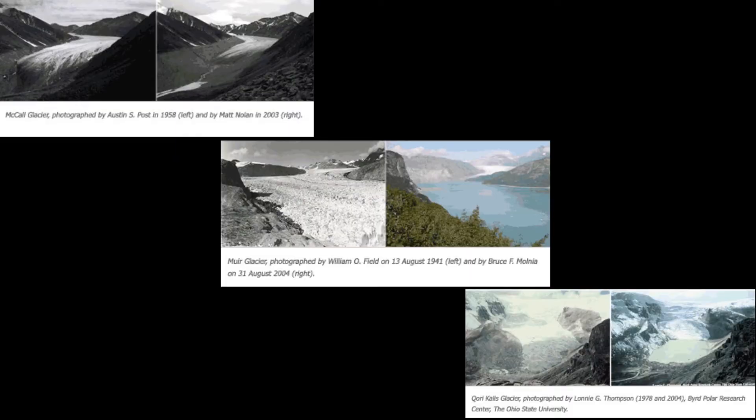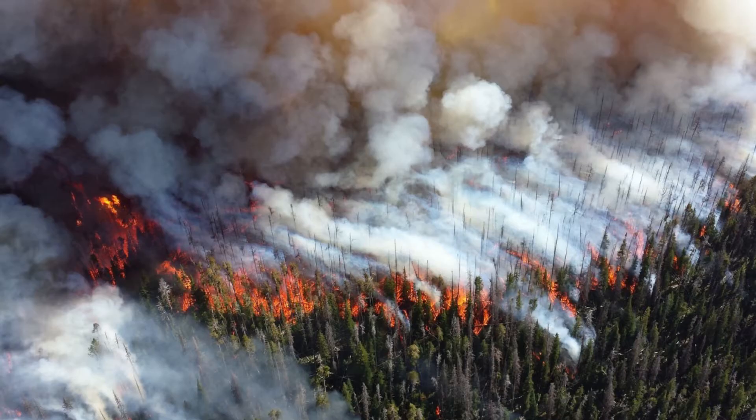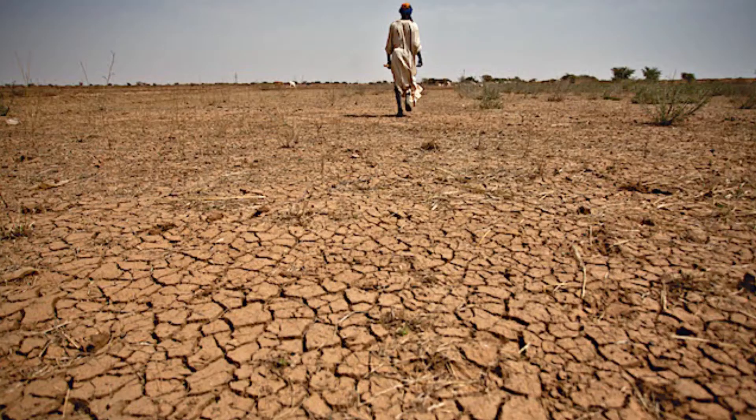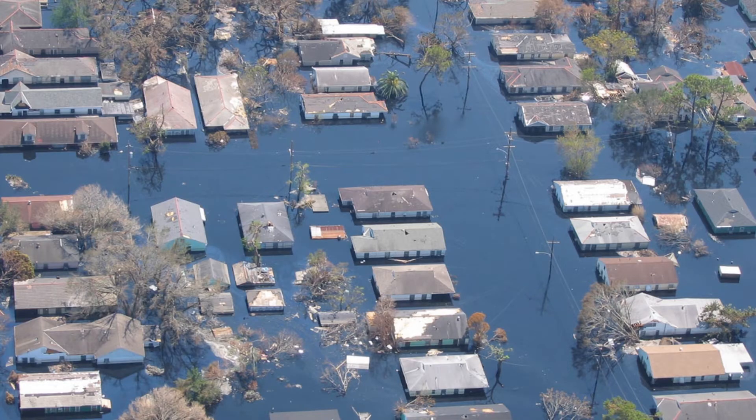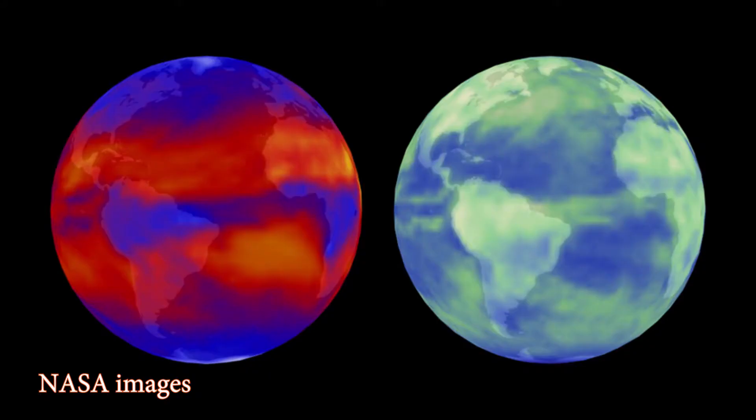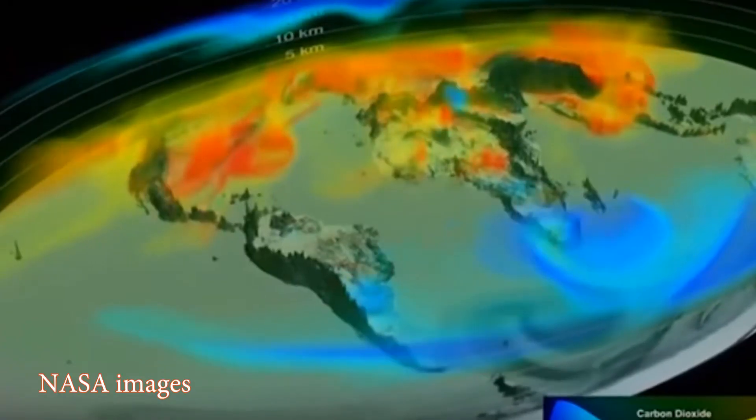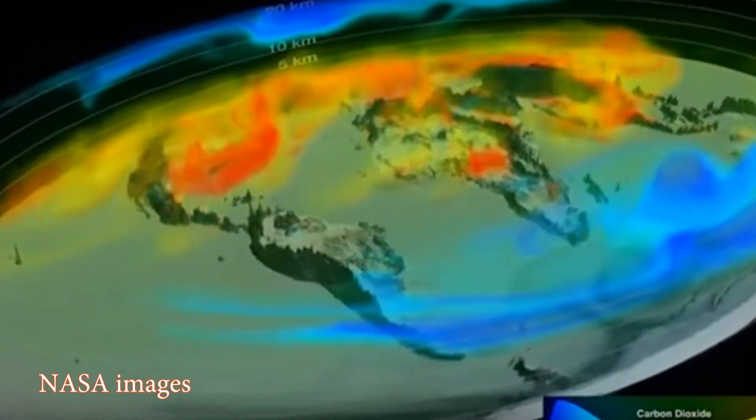The effects of global warming and climate change are now quite visible all over the planet to anyone willing to look. But the underlying mechanism takes place mainly in light beyond the limits of human eyesight.